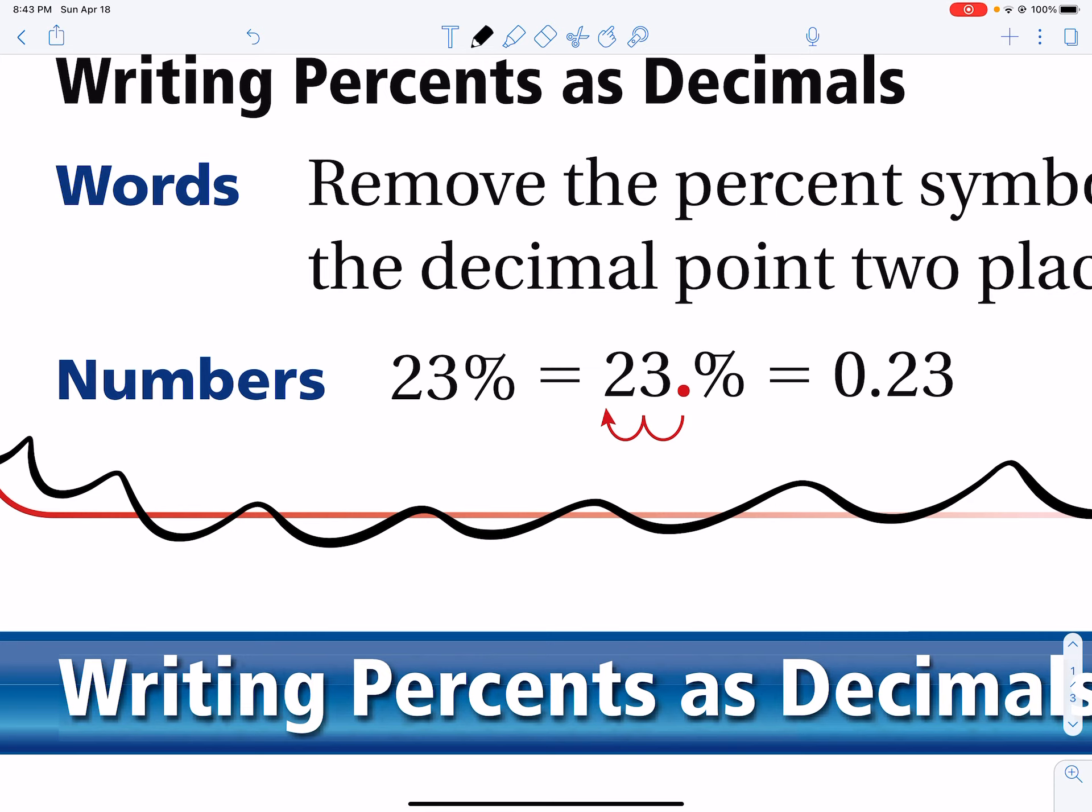And when I see 23 percent, I see the percent symbol. So you also see a hidden decimal to the right of the three in red. You can either divide by a hundred or you just move that decimal place two units to the left. One, two. It ends up here.